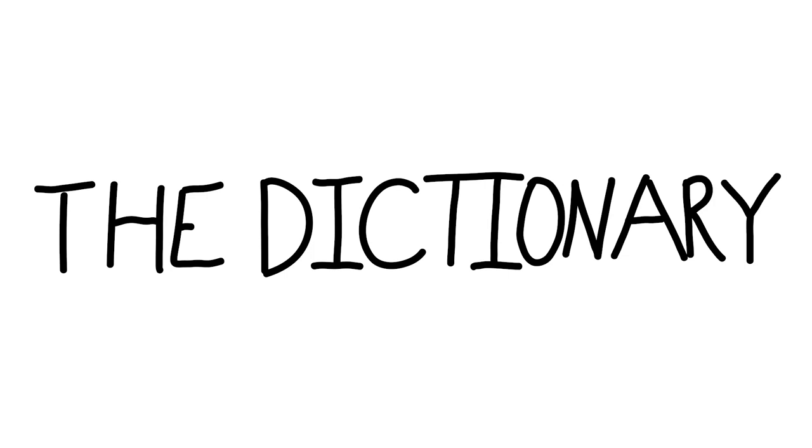Hello and welcome to the first episode of The Dictionary. That is literally what I will be reading to you. Number one: A. Plural: A's or As, often capitalized. Definition one: A — the first letter of the English alphabet. Also B: a graphic representation of this letter. Also C: a speech counterpart of orthographic A.